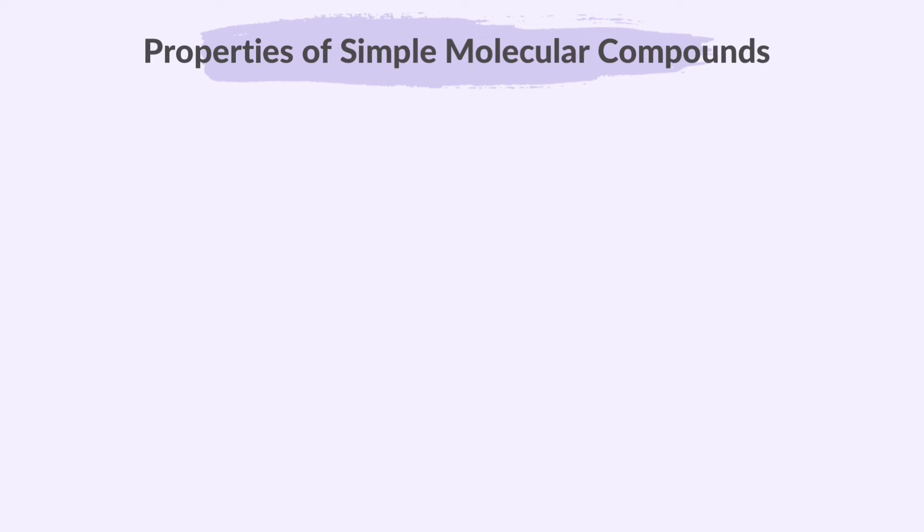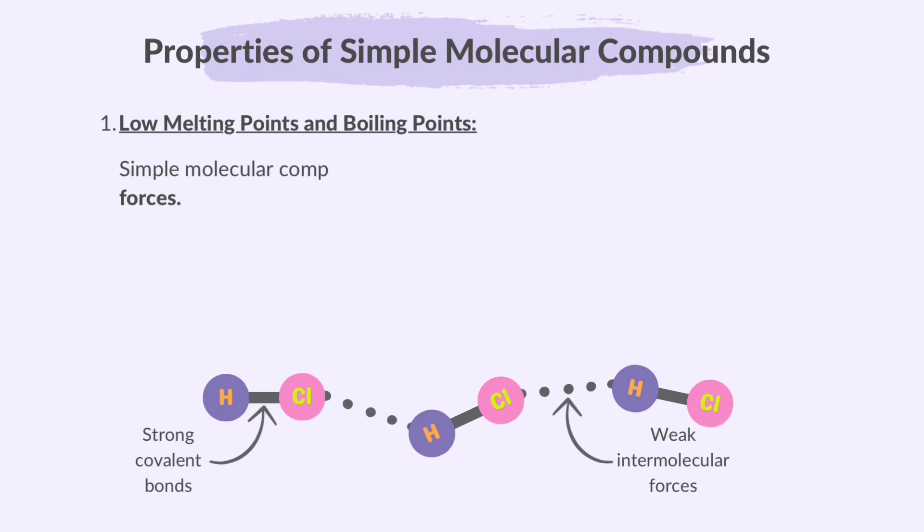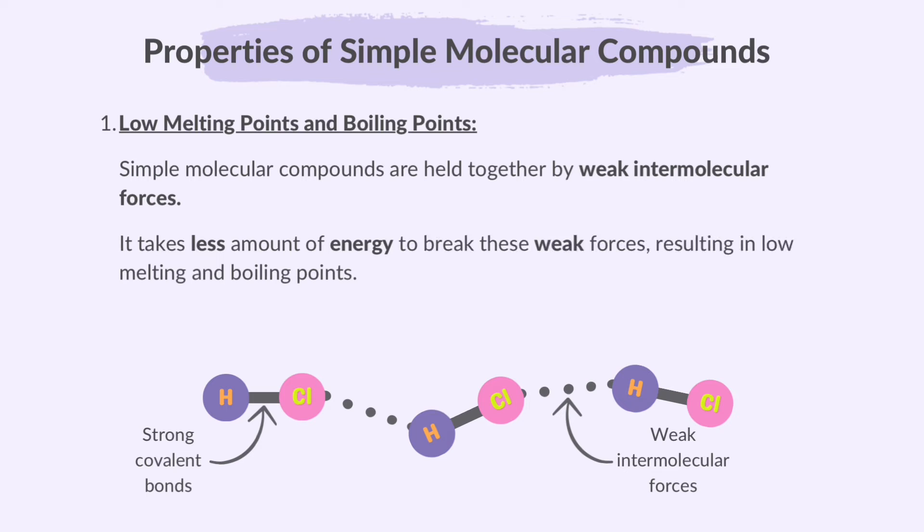Now let's describe the properties of simple molecular compounds. Simple molecular compounds have low melting and boiling points because they are held together by weak forces between molecules, or intermolecular forces. These weak forces make it easy to separate the molecules, requiring little energy to melt or boil. As a result, many simple molecular compounds are gases or liquids at room temperature.